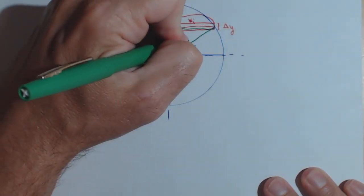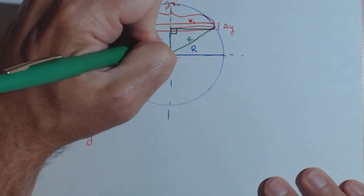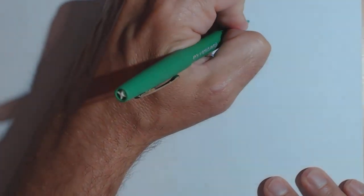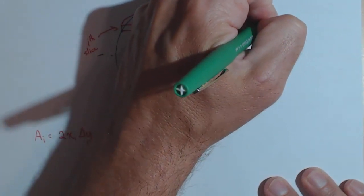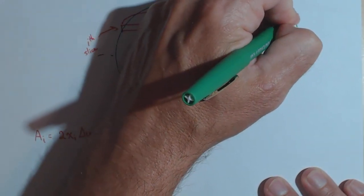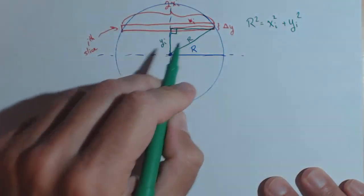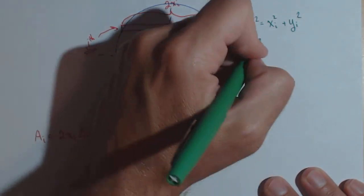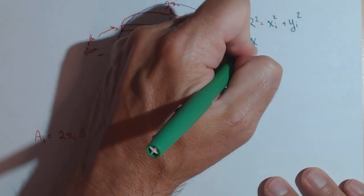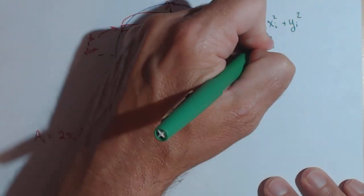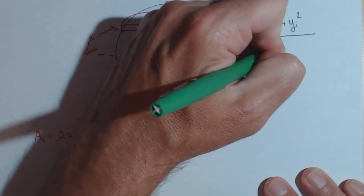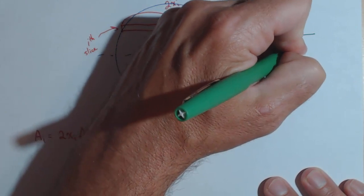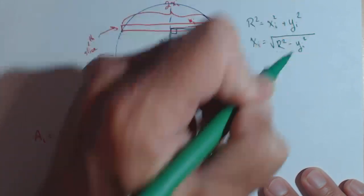The hypotenuse is the radius, so that's r. The vertical leg is y sub i, and the horizontal leg is x sub i. So by the Pythagorean theorem, r squared equals x sub i squared plus y sub i squared for any slice. We want to solve for x sub i, so x sub i equals the square root of r squared minus y sub i squared.